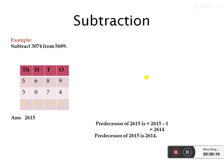First we are going to see subtraction. Example: subtract 3074 from 5689. First we have to check the number — how many digits are there. Here there are 4 digits, so this is a 4-digit number. The places are: ones, tens, hundreds, thousands. We have to set up the places.